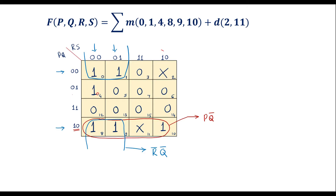Now here we have one more 1. This one can be paired with another one to make a pair. So this one and this one together form a pair. The value of this: it covers these two rows and the common value is 0, which is P bar. And here it is 0, 0 — that is R bar and S bar. So the term is P bar R bar S bar. Now we have covered all ones, so we stop.